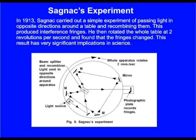In 1913, Sagnac carried out a simple experiment of passing light in opposite directions around a table and recombining them. This produced interference fringes. He then rotated the whole table at two revolutions per second and found that the fringes changed. This result has very significant implications in science.